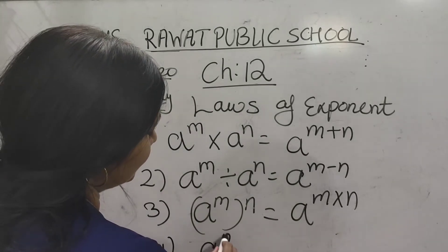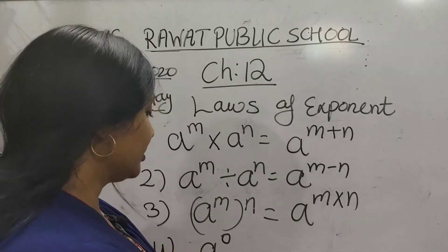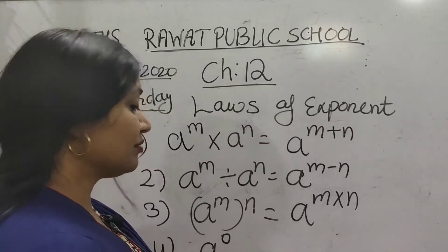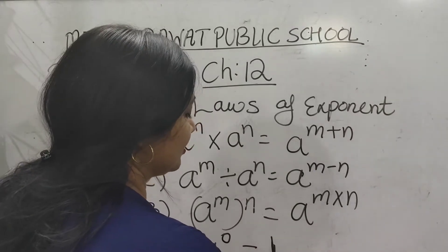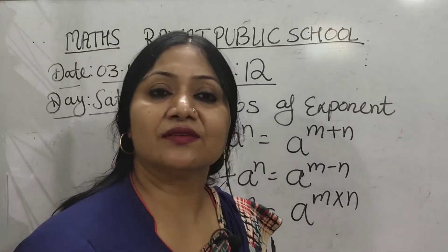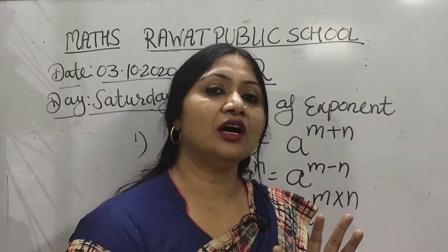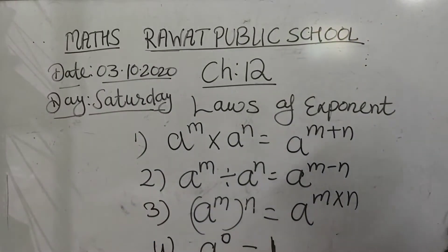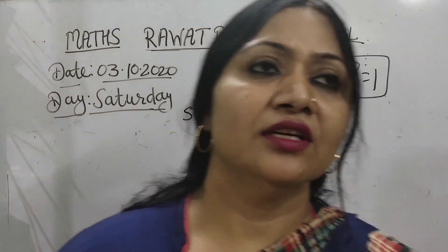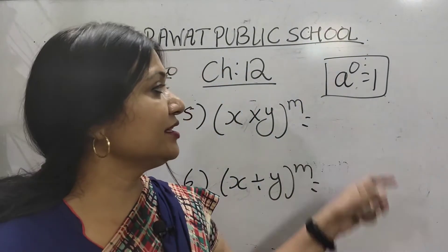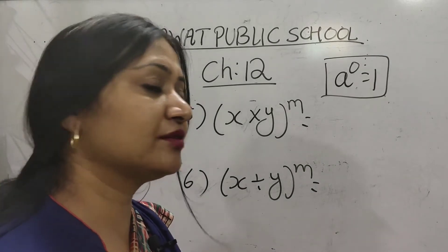Fourth law: jab bhi kisi base ka power zero hota hai — when any base has exponent zero — to uski value hamesha one hoti hai. Always the standard value is one. So a raised to power zero is equal to one. Ye standard value hai — whenever any base has power zero, your answer will always be one.